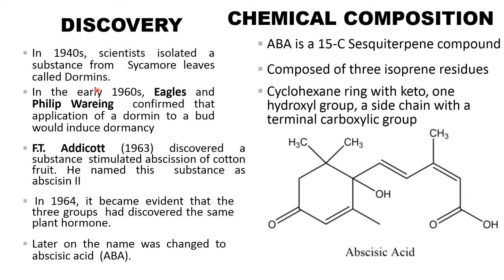Discovery of abscisic acid: in the 1940s, scientists isolated a substance from leaves called dormin. In the early 1960s, it was confirmed that the application of dormin to a bud would induce dormancy. In 1963, F.T. Addicott discovered a substance that stimulated abscission of the cotton fruit; he named this substance abscissin II. In 1964, it became evident that three groups had discovered the same plant hormone, and the name was later changed to abscisic acid.